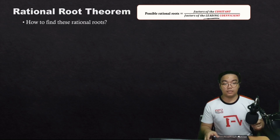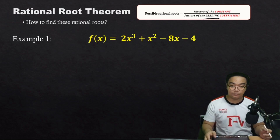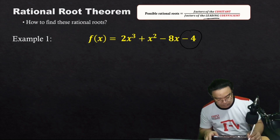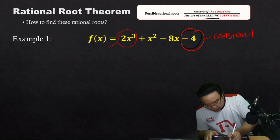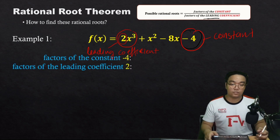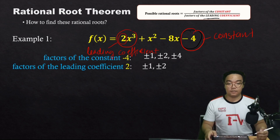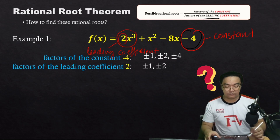The possible rational roots can be obtained by dividing the factors of the constant by the factors of the leading coefficient. For example, in the polynomial 2x³ + x² − 8x − 4, the constant is 4 and the leading coefficient is 2. The factors of negative 4 are ±1, ±2, and ±4, and the factors of positive 2 are ±1 and ±2. Factors are numbers that divide evenly, giving a remainder of 0.